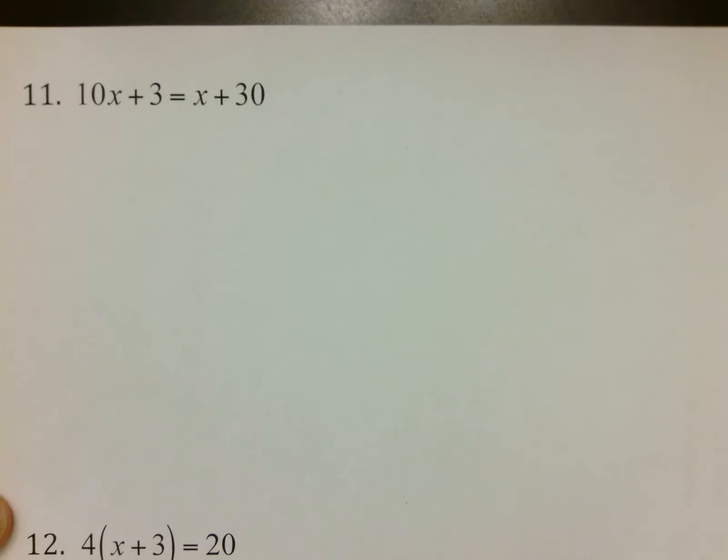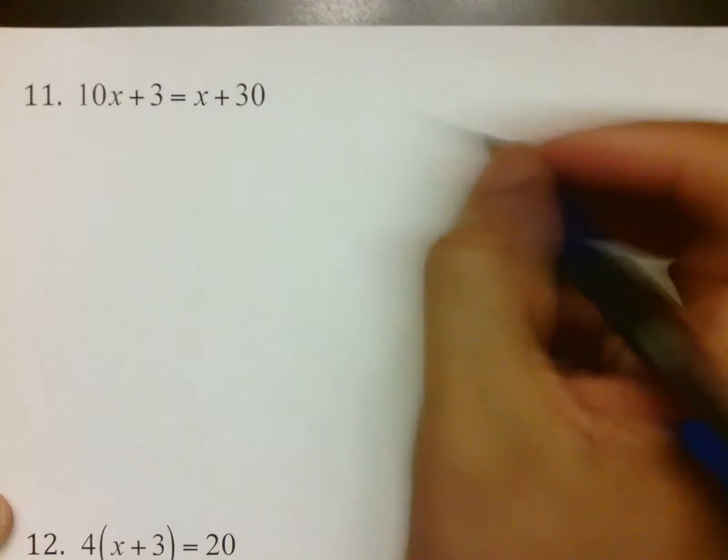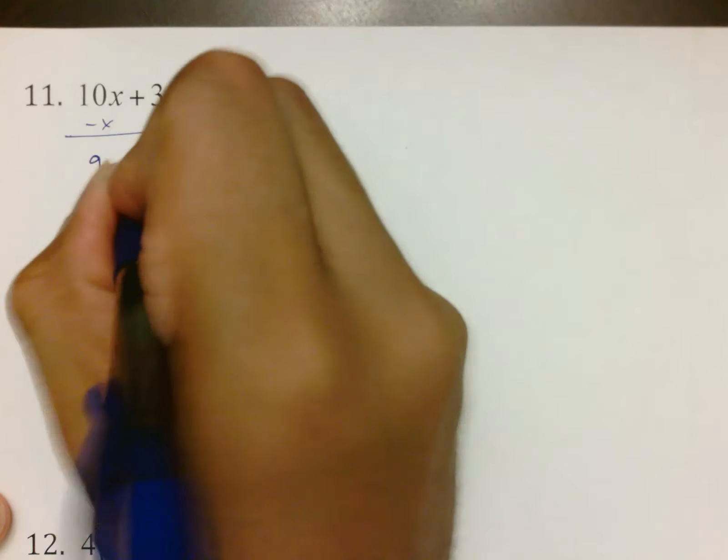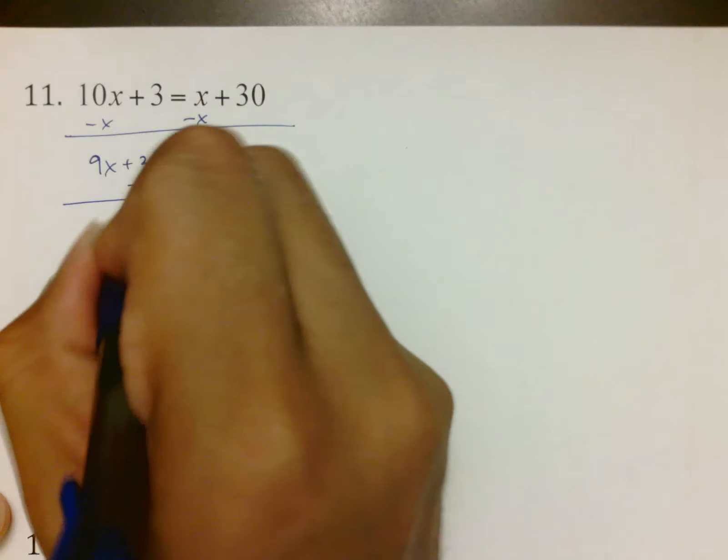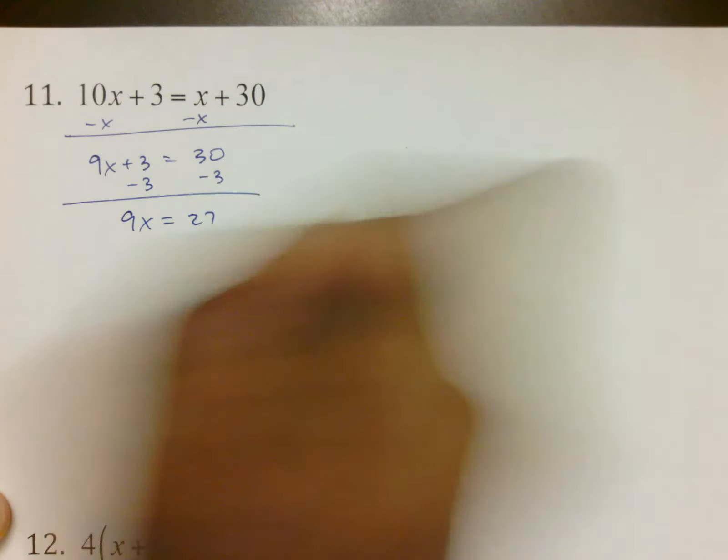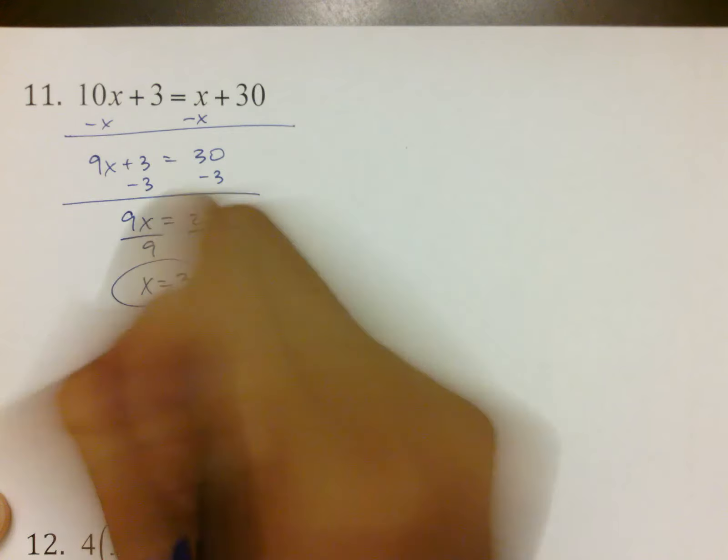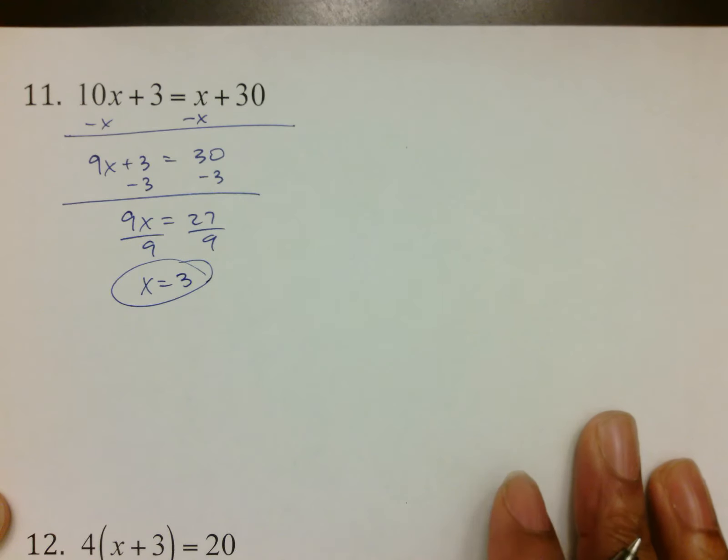Number 11, the problem on this one is that you've got X's on both sides. Remember, you have to move this X over there by making it negative. You cannot just put the 10X together with the X because there's a wall in between them. That gives us 9X plus 3 equals 30. You then subtract 3 from both sides, getting 9X equals 27. You then divide by 9, getting X equals 3.